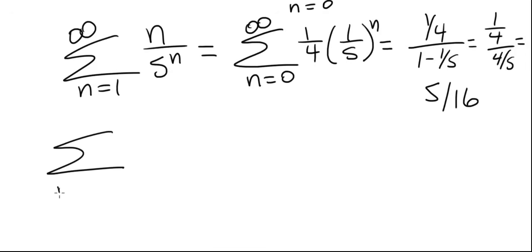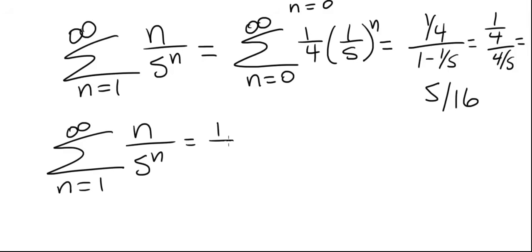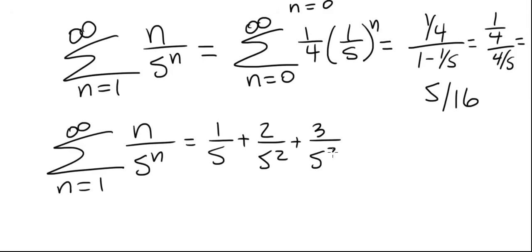So we used the idea of geometric series to find what a non-geometric series converges to. To summarize, the series from 1 to infinity of n divided by 5 to the n — which is 1 over 5 plus 2 over 5 squared plus 3 over 5 cubed plus 4 over 5 to the 4th and so on — converges to 5 over 16.